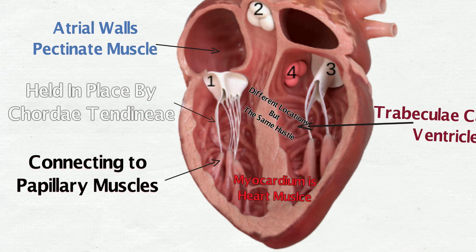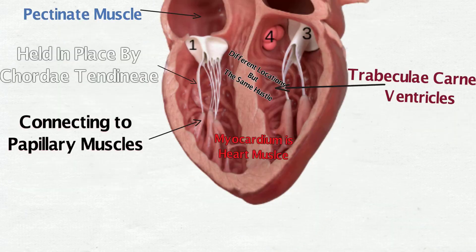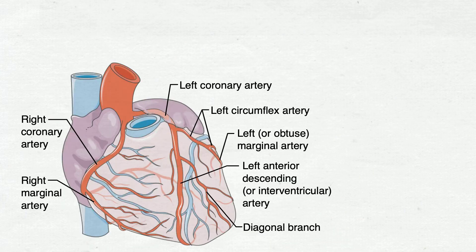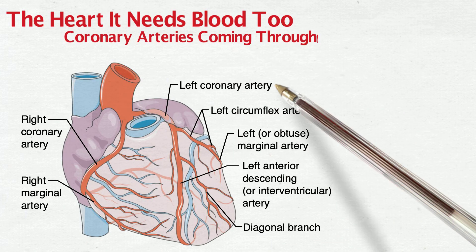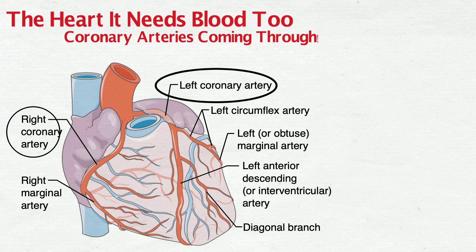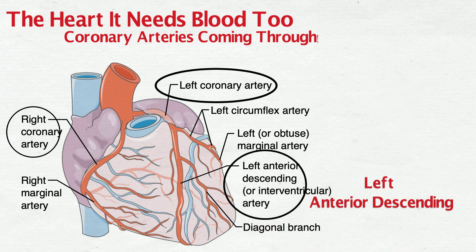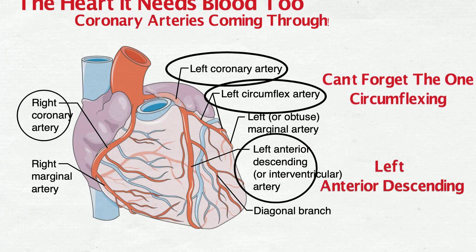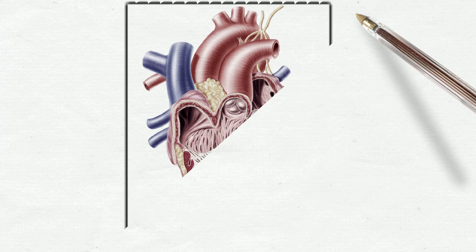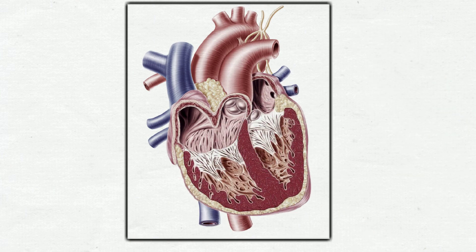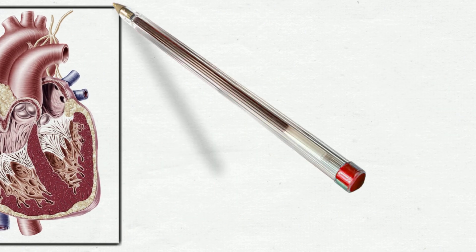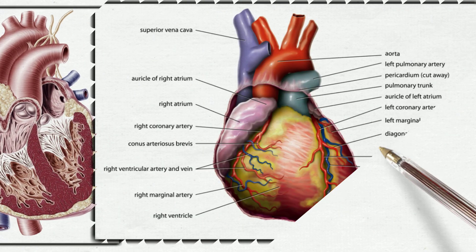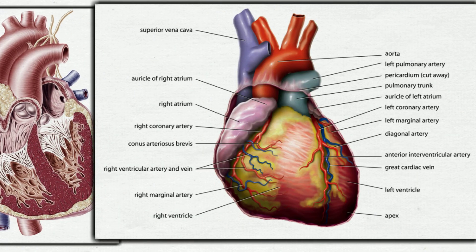Myocardium is heart muscle — the heart needs blood too. Coronary arteries coming through: left anterior descending, can't forget the circumflex one. Top down right to left, the blood flow inside your chest — atrium in the ventricles, pumping blood through your vessels.